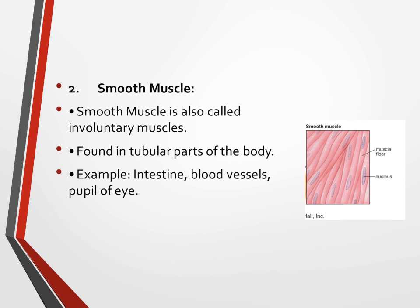Smooth muscles are found in tubular and visceral parts of the body — for example, the intestine, blood vessels, and pupil of the eye consist of this type of muscle. Smooth muscles are also shown in this figure. These are the muscle fibers of smooth muscles and this is the nucleus of smooth muscle shown in this figure.